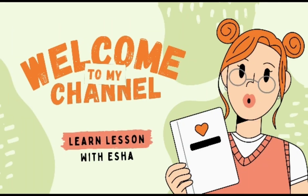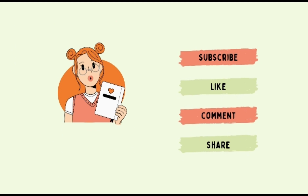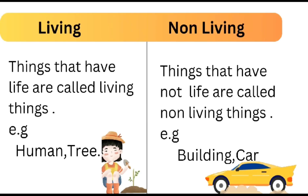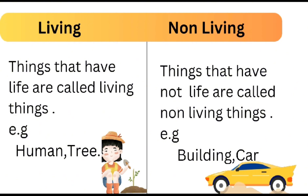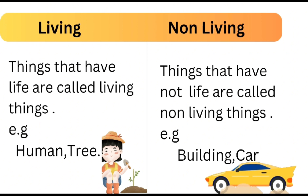Welcome to my YouTube channel and lesson with Isha. If you are new to this channel, don't forget to subscribe. What is a living thing? Things that have life are called living things, like humans and trees. What is a non-living thing? Things that do not have life are called non-living things, like buildings and cars. Here are some examples for you to understand it better.